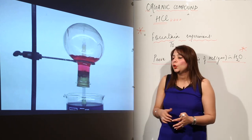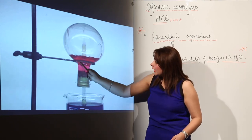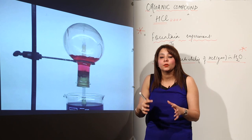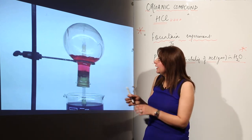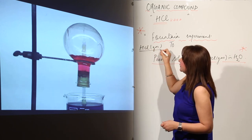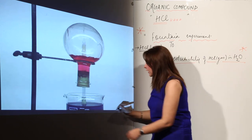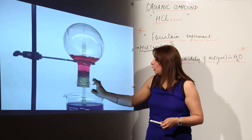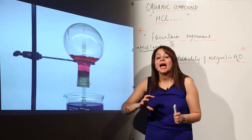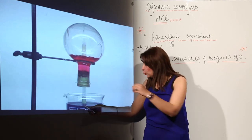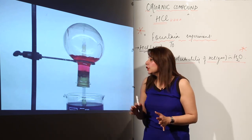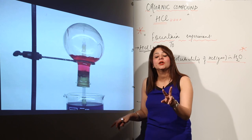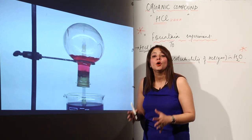This is the apparatus shown on the screen used for the fountain experiment. It consists of a stand, a round bottom flask, a rubber cock, and a beaker. The round bottom flask carries the HCl gas, and the beaker contains blue litmus solution. The mouth of the round bottom flask is plugged with a rubber cock that has two holes: one for the jet tube going into the beaker, and one for the dropper.